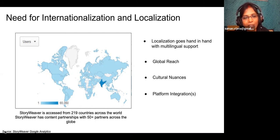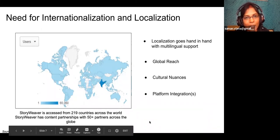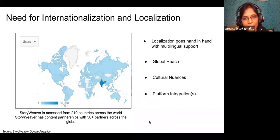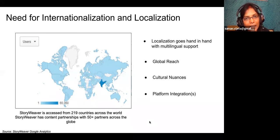On platform integrations — this is our strength. Storyweaver has multiple packages offered to partners, and those integrations need localization to be part of them. For example, we have a curated Storyweaver microsite called 'Learn at Home,' which is localized in Hindi and English. When you click on it in Hindi, it opens Storyweaver in Hindi along with curated Hindi stories, so people can easily connect to it.